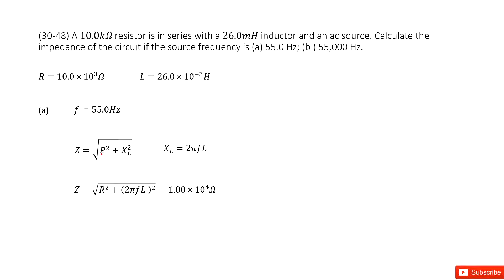So we know the function in this chapter. The impedance Z equals the square root of R squared plus X_L squared, where X_L is the inductive reactance.